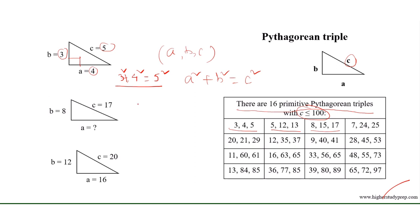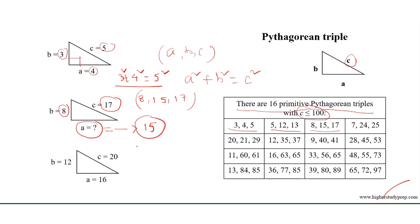So if we know the Pythagorean triple 8, 15, 17, then from this figure we can find the unknown value of A: since one leg is 8 and the hypotenuse is 17, the other leg must be 15. It is to be noted that 12, 16, and 20 are not primitive Pythagorean triples because they are multiples of 3, 4, and 5.